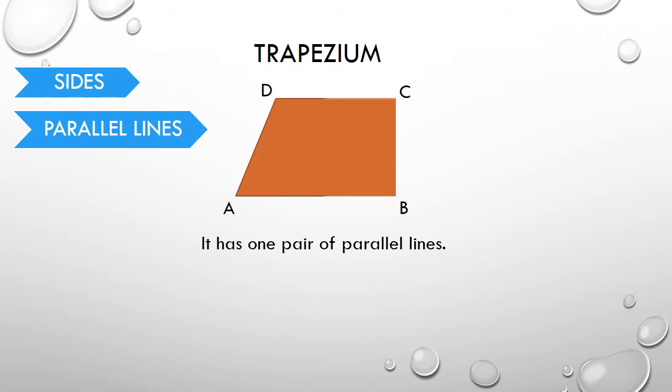Parallel lines. A trapezium has only one pair of parallel lines. In the figure, AB is parallel to CD. Hence, this quadrilateral is known as a trapezium.